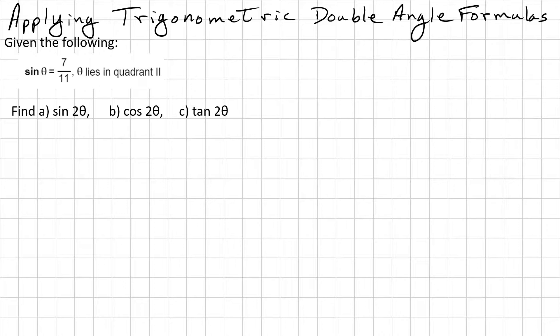Applying trigonometric double angle formulas. Given the following: sine theta equals 7 over 11, and theta lies in quadrant 2. Find: a) sine 2 theta, b) cosine 2 theta, and c) tangent 2 theta.